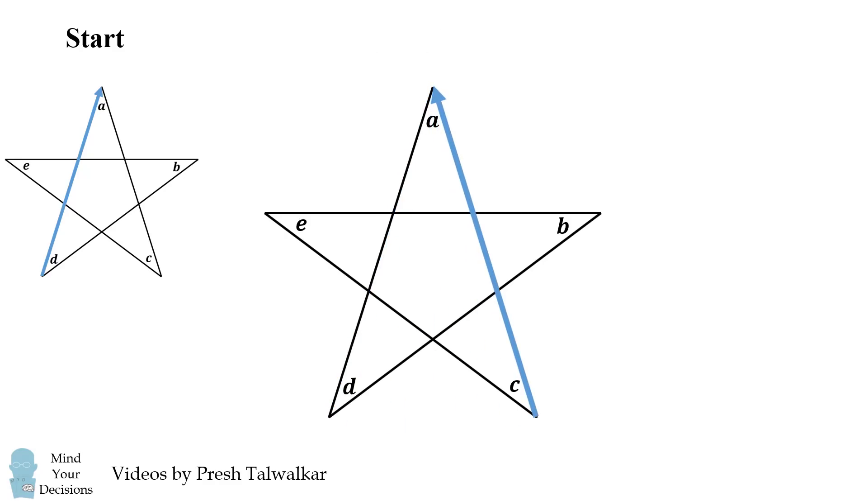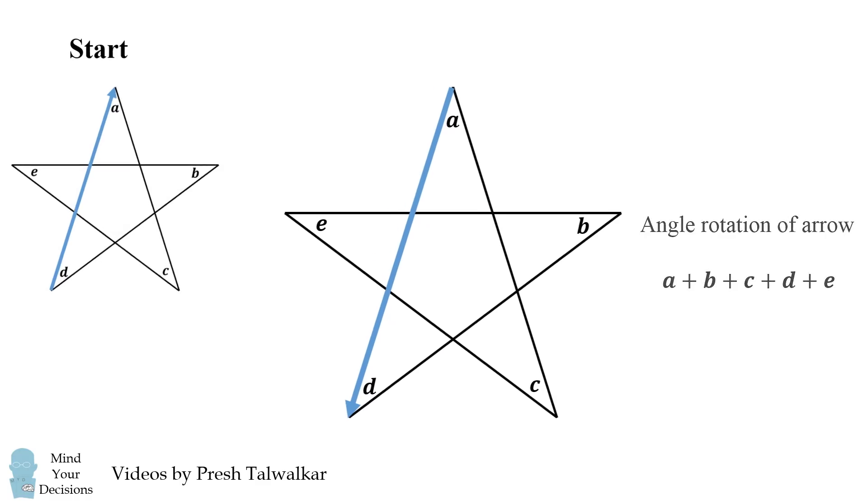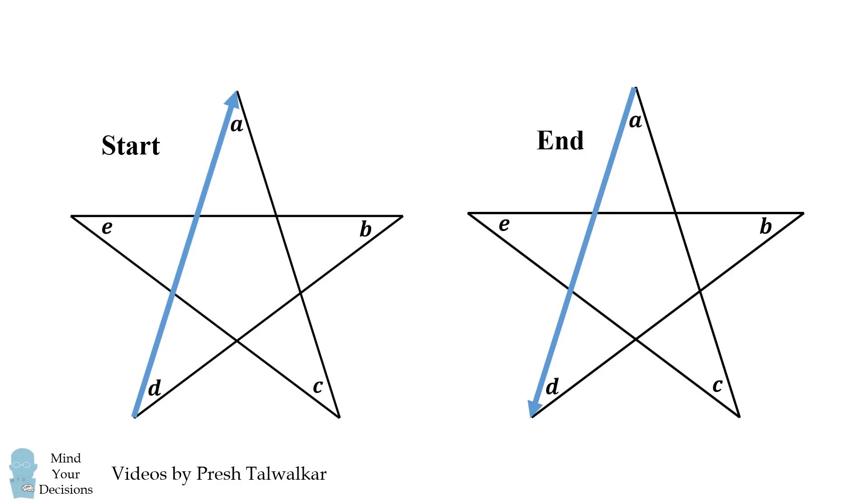Now let's see what happens as we rotate this object through each of these angles. We'll first rotate this object through the angle A. Now we'll rotate it through angle C. So this arrow has moved a total of A plus C degrees. We'll now move it along E degrees, then we'll move it along B degrees, and finally we'll move it along D degrees. So now let's compare the start and the end. Well, the arrow is in the same place except it's flipped upside down. So after the angle rotation of all of these corner angles, the arrow rotates 180 degrees. Hence, the sum of all these angles is 180 degrees.